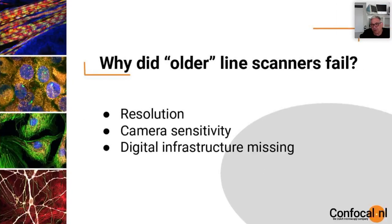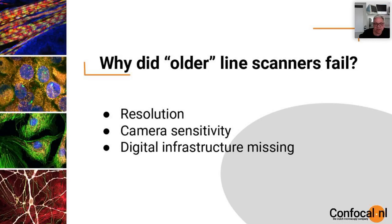Although the system design was good, commercially it failed. All the slit scanners I showed you failed because the resolution was not good enough. The cameras being used at that time — there were no scientific CMOS cameras, no EMCCD cameras, just very simple CCD chips that lacked sensitivity. Also, you could record images perhaps on videotape but there was no digital infrastructure to bring them into a computer. Deconvolution was not available in real time — a single image deconvolution took overnight. Because of the poor infrastructure, cameras, and sensitivity, these systems failed.